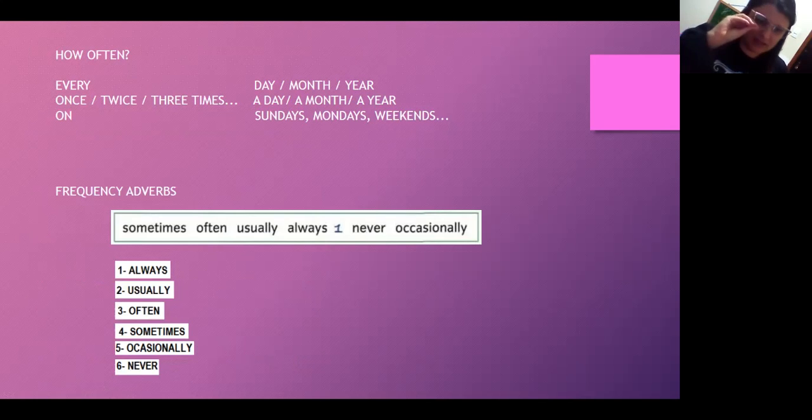E junto com o simple present, tem algumas palavrinhas que a gente usa muito. Então, lembram do how often, que tava no nosso último vídeo, que significava com que frequência? Então, quando aparece essa pergunta, a gente tem várias opções de resposta. A gente pode responder every day, every month, every year. Once a day, twice a day, three times a day. Once é uma vez, twice é duas vezes. E a partir de então, três vezes, quatro vezes, cinco vezes. On Sundays, on Mondays, on weekends. Então, se alguém pergunta pra você, how often do you study English? Once a week. Uma vez por semana. E assim por diante.